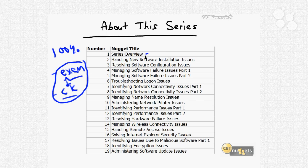We're on Nugget 1, the overview. We're going to dive right in after this nugget by looking at new software installation issues and then software configuration, software failure. There's a lot on managing software. If you've done work as a desktop support technician, that should be a familiar refrain because managing software is a huge part of the desktop support tech's role. We'll look at some network stuff as well, troubleshooting logon, identifying and resolving network connectivity issues.